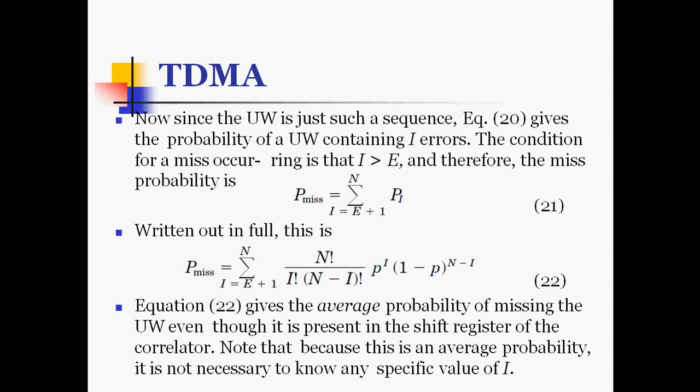This equation gives the average probability of missing the unique word even though it is present in the shift register of the correlator. Because this is an average probability, it is not necessary to know any specific value of I.